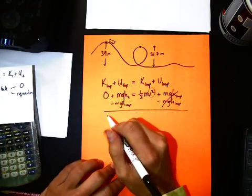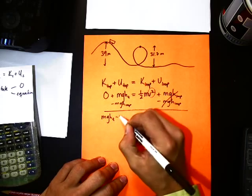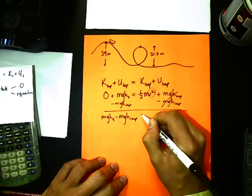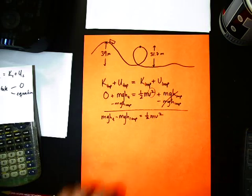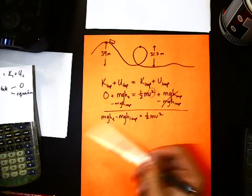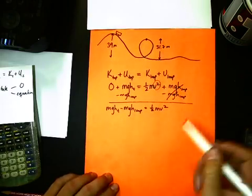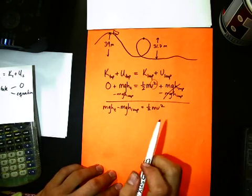So I'm going to write out MG height at the top minus MG height at the loop equals one-half MV squared. All right. If you wanted to, you can factor out an MG. I'm not going to do that. There's no need to. It would look more concise and elegant, but there's not necessarily a need for that.